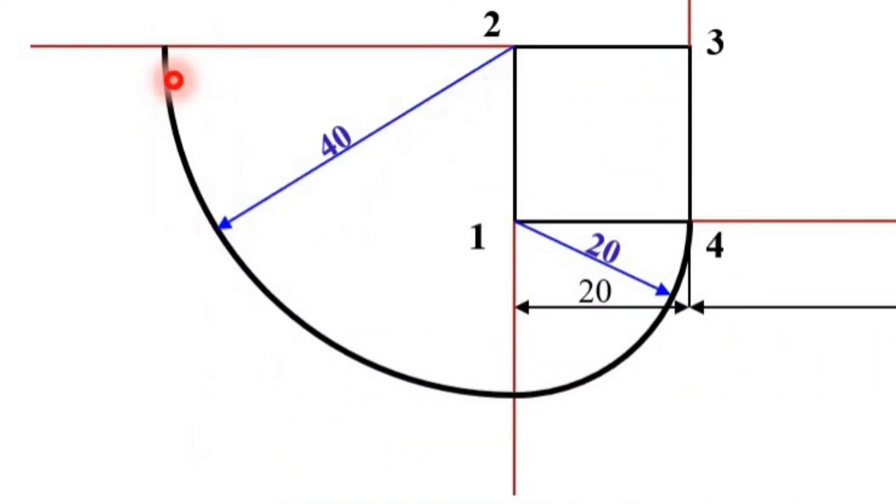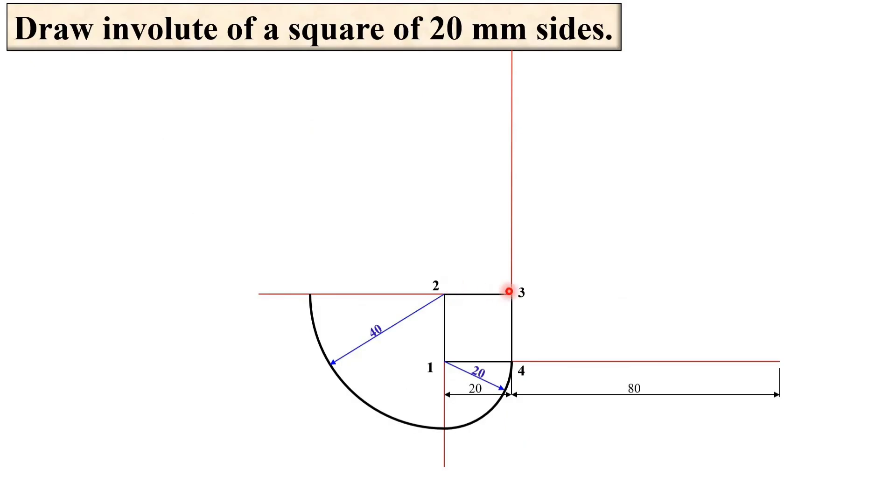Definitely you can imagine your radius is now 40 plus 20, that means 60. So take three as the center and draw the arc with the help of the compass.